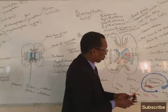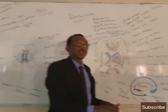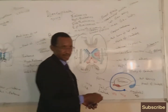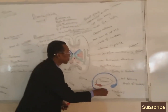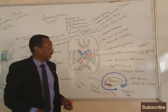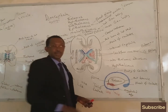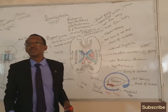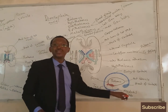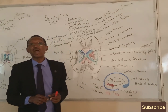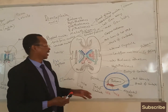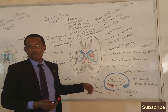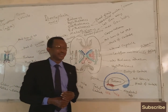The caudate nucleus, which is part of the basal nuclei, consists of a head, body, and tail. The tail end of the caudate nucleus is bulbous, and this bulbous end of the caudate nucleus is called the amygdaloid body. So the distal end of the tail of the caudate nucleus is the amygdaloid body.